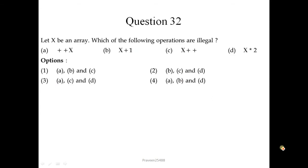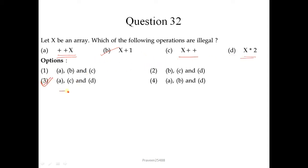Question number 32: let X be an array. Which of the following operations are illegal? The first operation is not allowed — it is illegal. The second can be allowed. The post-increment operation is also not allowed, and the fourth is also not allowed. So A, C, and D are illegal; the correct option is the third one.